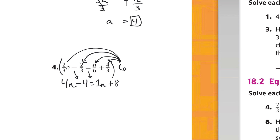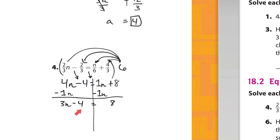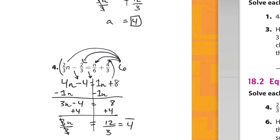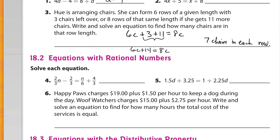Now that we've gotten rid of the fractions, we solve normally. I subtract 1n to push the variable terms to the left-hand side. 4n minus 1n is 3n, bringing down the minus 4 and equals 8. Then add 4 to both sides — the inverse of minus 4 — giving 3n equals 12. Finally, divide both sides by 3: 12 divided by 3 is 4, so n equals 4.